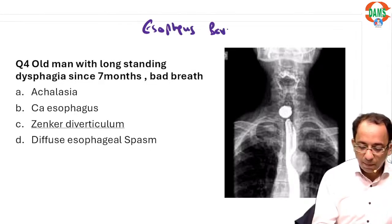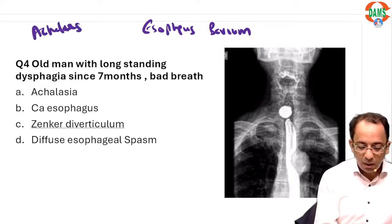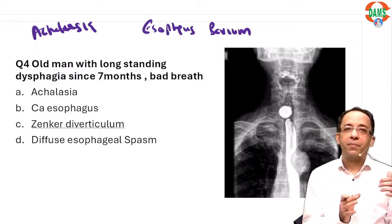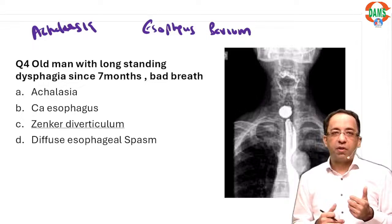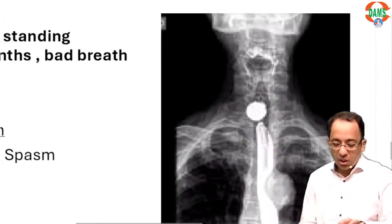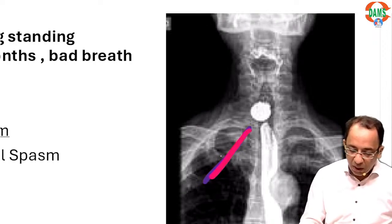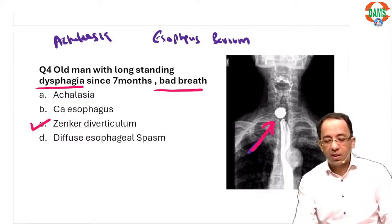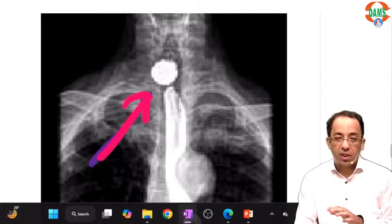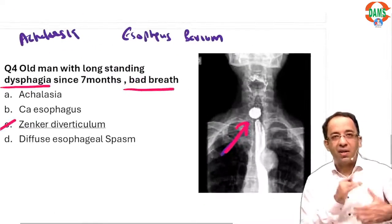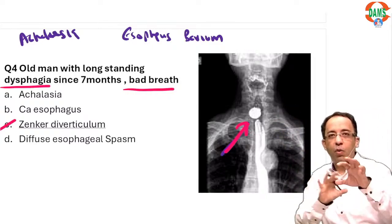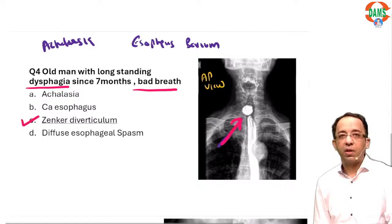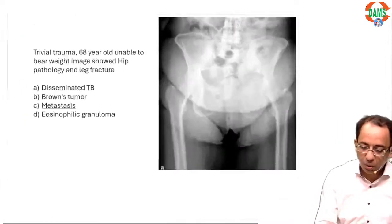Now a direct question: INICT likes asking esophagus barium images. They might ask achalasia (bird beak), esophageal carcinoma (rat tail, shouldering, apple core), or corkscrew appearance of diffuse esophageal spasm. This time they had an outpouching — with a long-standing history of foul breath (halitosis) and dysphagia. This is pointing towards Zenker's diverticulum. Most students believed the image was an AP view showing a Zenker's — usually they show a lateral image, so using an AP view was the twist. The answer is Zenker's diverticulum.